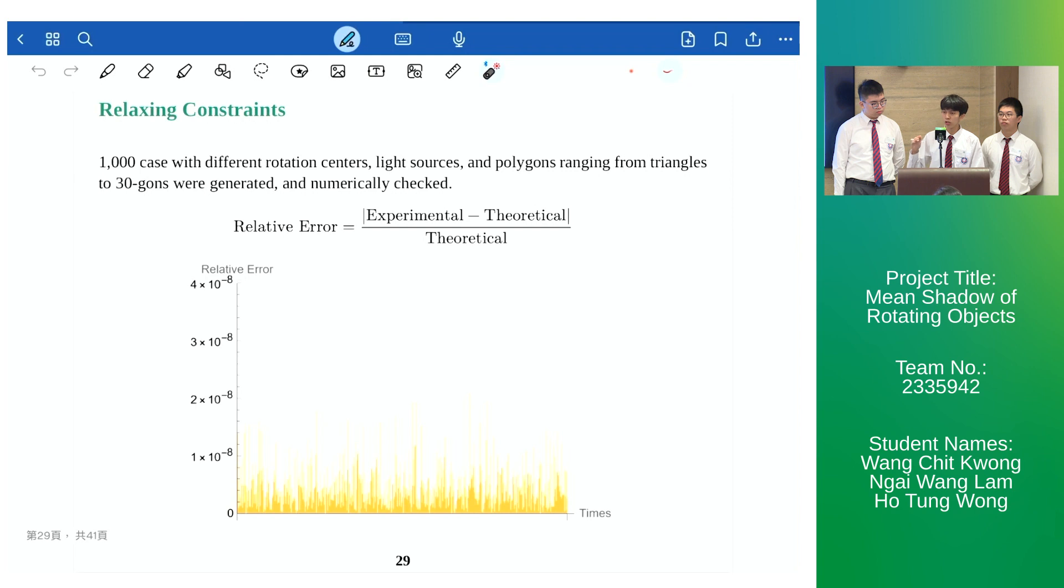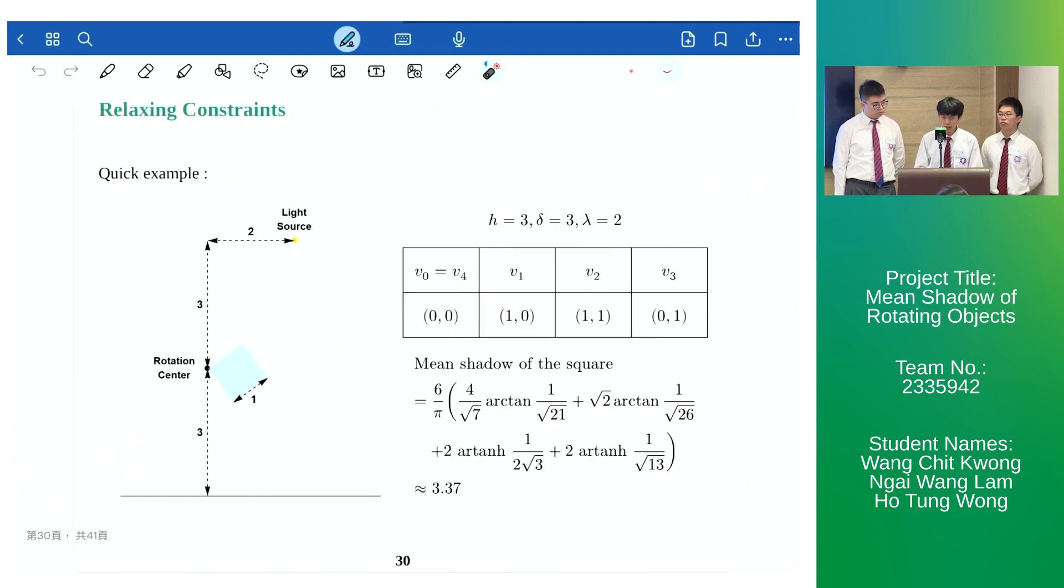Simulations conducted on computer also validate our findings. As a quick example, by plugging in this set of conditions into our formula we can easily compute the mean shadow of the unit square rotating about one of its vertices which is given to be roughly 3.37.